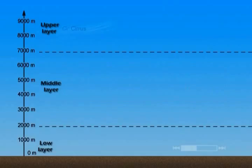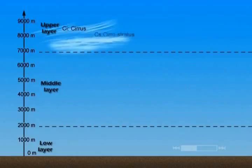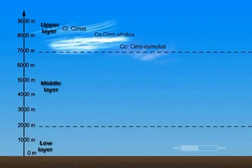Within the upper layer, we see cirrus, cirrostratus, and cirrocumulus clouds, which are mainly composed of small ice crystals. Notice the two letters you see before the name of each cloud — they represent the international abbreviation for each particular cloud.